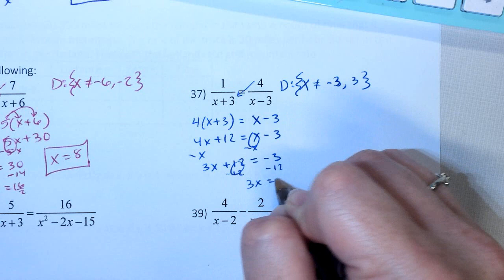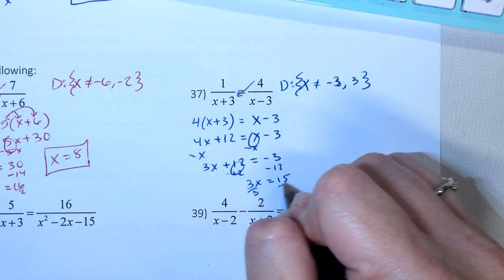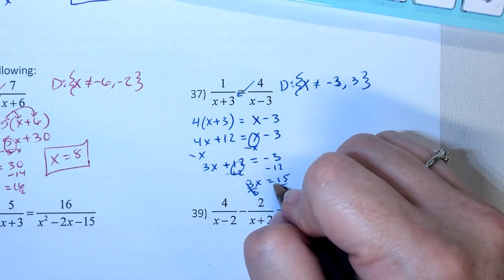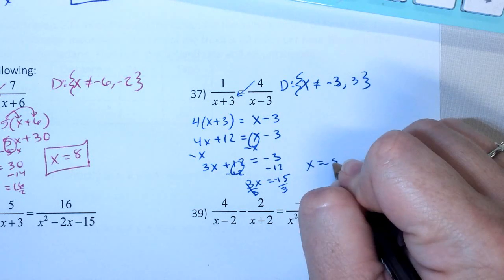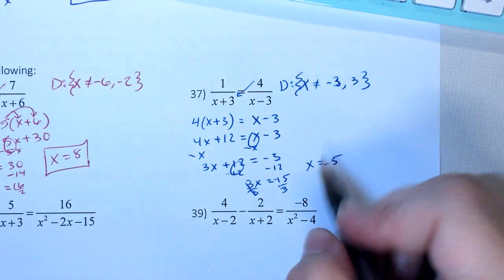3x equals negative 15. Divide by 3, divide by 3. Negative 15 divided by 3, x equals negative 5. Which is allowed, so there's my answer.